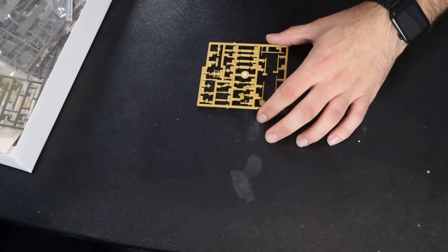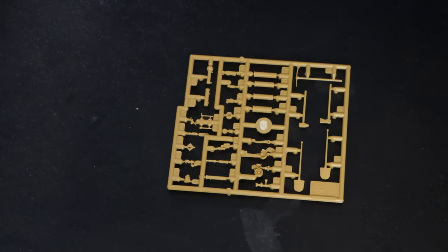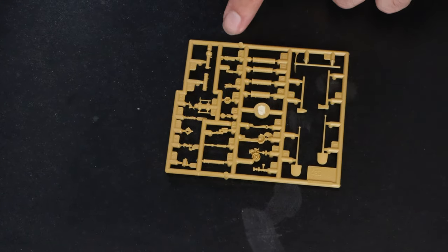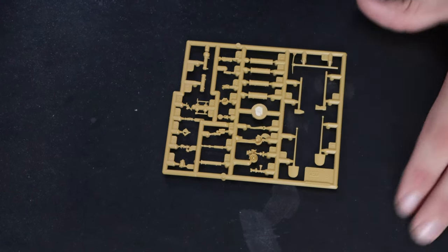Next bag. So then there's a little tiny sprue molded in the tan color again. That includes tools and a few other miscellaneous things. It looks like some sights or something like that there.